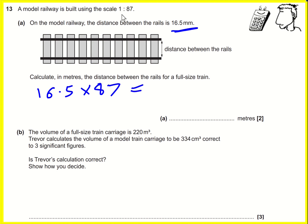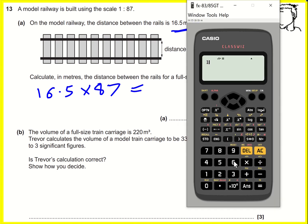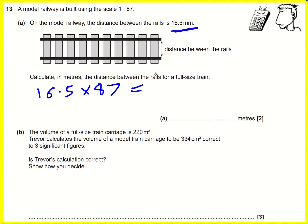It's going to be that way around because the smaller one is worth one part and the bigger one, the actual distance, is worth 87 parts. So we multiply 16.5 by 87, which gives us 1435.5, but that's still in millimeters.